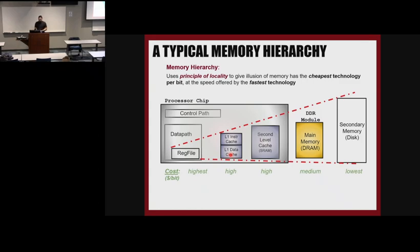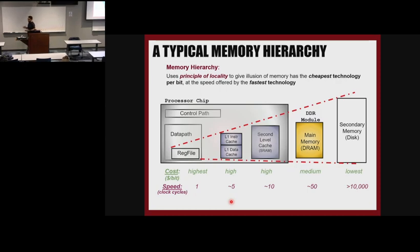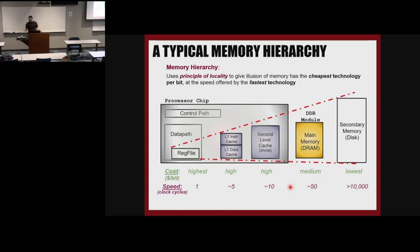Looking at cost: the register file has the highest cost per bit, then caches, and the further we get, the cheaper it gets. For speed — these are rough numbers — the register file can be read in one clock cycle. The first-level cache needs around five cycles. The second-level cache is around ten clock cycles. Third-level cache, which many modern processors have, is between 10 and 50 cycles. Main memory needs around 50 clock cycles, and SSD needs thousands of clock cycles to bring data all the way to the processor.